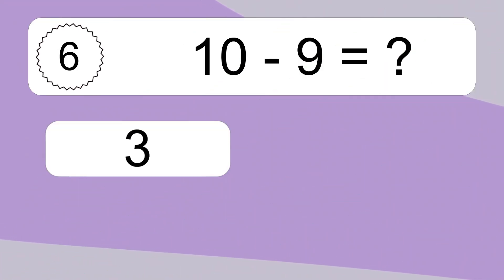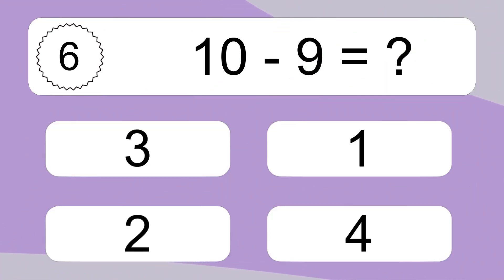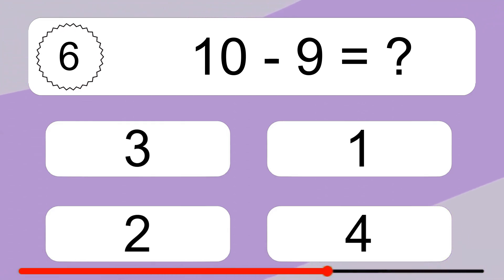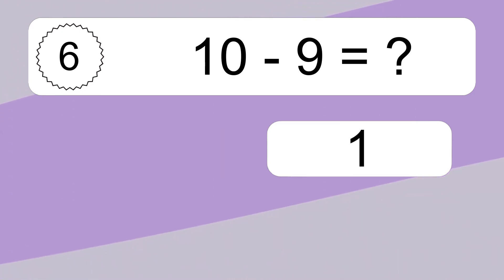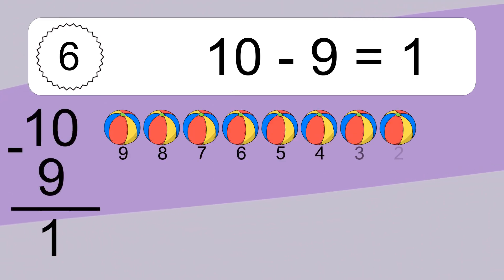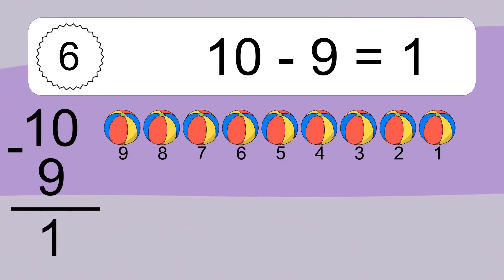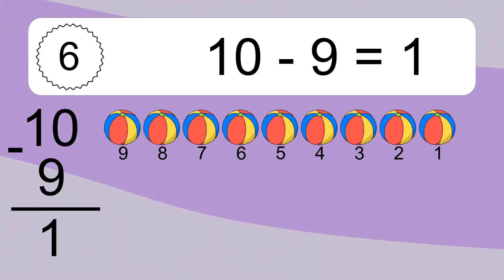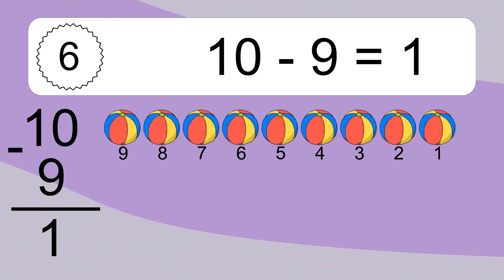10 minus 9 equals what? 10 minus 9 equals 1. Let's count it: 9, 8, 7, 6, 5, 4, 3, 2, 1.